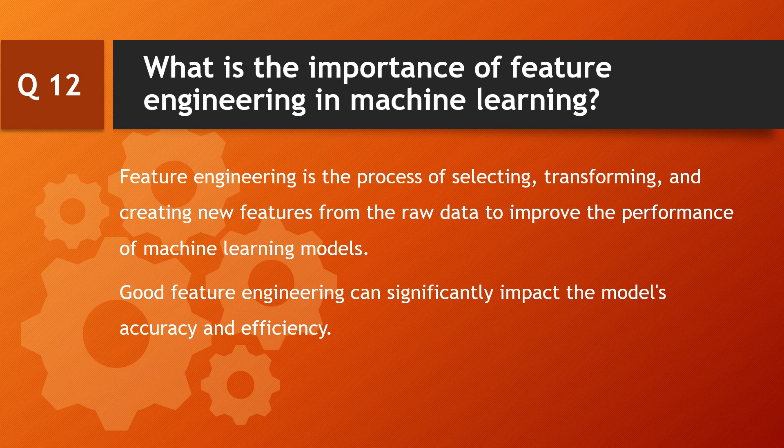Question: what is the importance of feature engineering in machine learning? Feature engineering is the process of selecting, transforming, and creating new features from the raw data to improve the performance of machine learning models. Good feature engineering can significantly impact the model's accuracy and its efficiency.